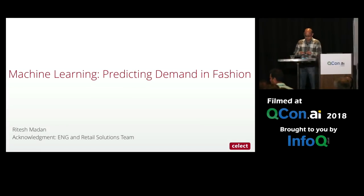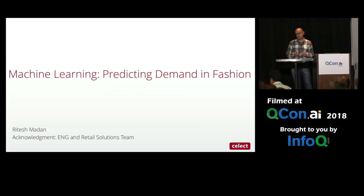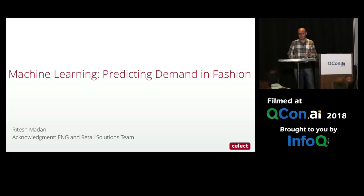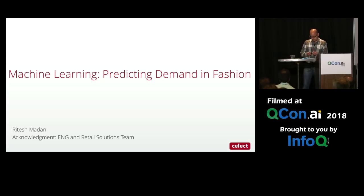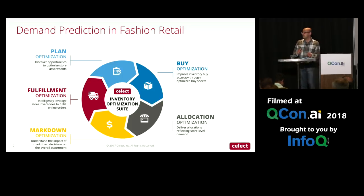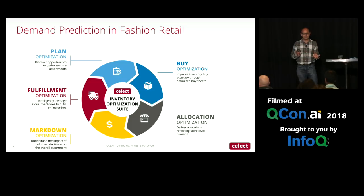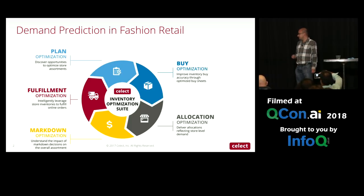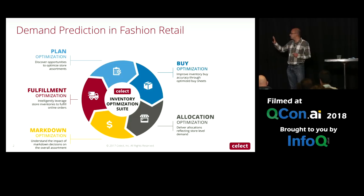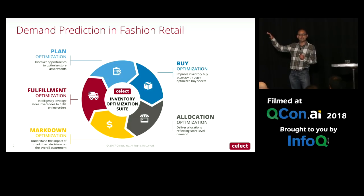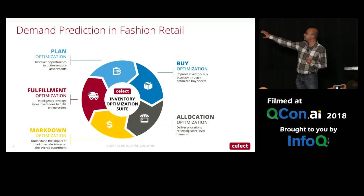At Select, we work on a bunch of different problems, all of which involve predicting demand and taking decisions based on the demands of products at different stages in the inventory cycle. In this talk, we'll focus on a particular problem that we solve. But before we get there, it's useful to understand what the inventory cycle at a fashion retailer looks like. The process starts about a year before the products are actually placed in the store, and that is what we call the plan optimization phase.